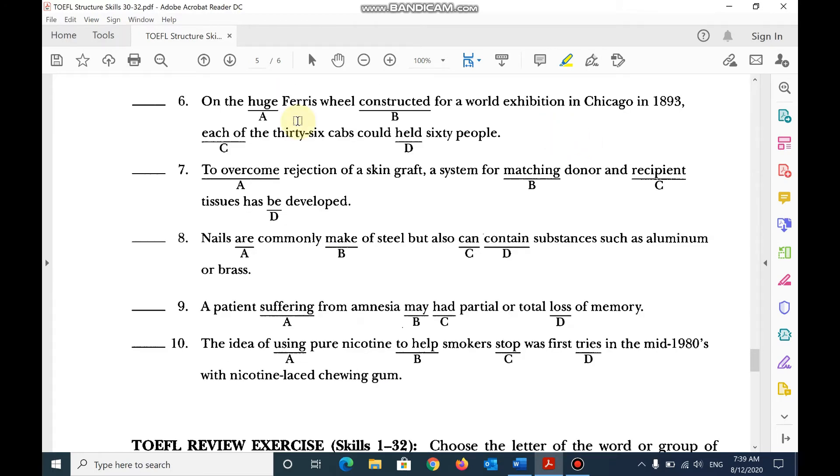Number 6, on the huge ferris wheel constructed for a world exhibition in Chicago in 1893, each of the 36 caps could hold.